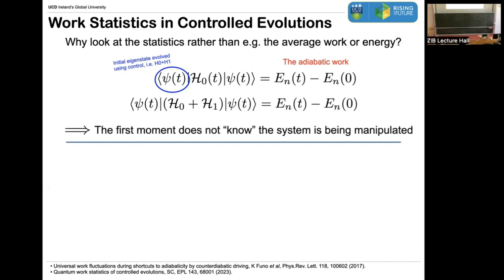What this then means is that if I look at just the level of the first moment of the work — of that probability distribution — the system has no idea that it's being controlled. At the level of the first moment, it doesn't know that you're doing anything at all. But we know, and there has been much work in the last couple of years, that control is not for free. We should assess what the resources necessary are, and what I'm most interested in is the thermodynamics.